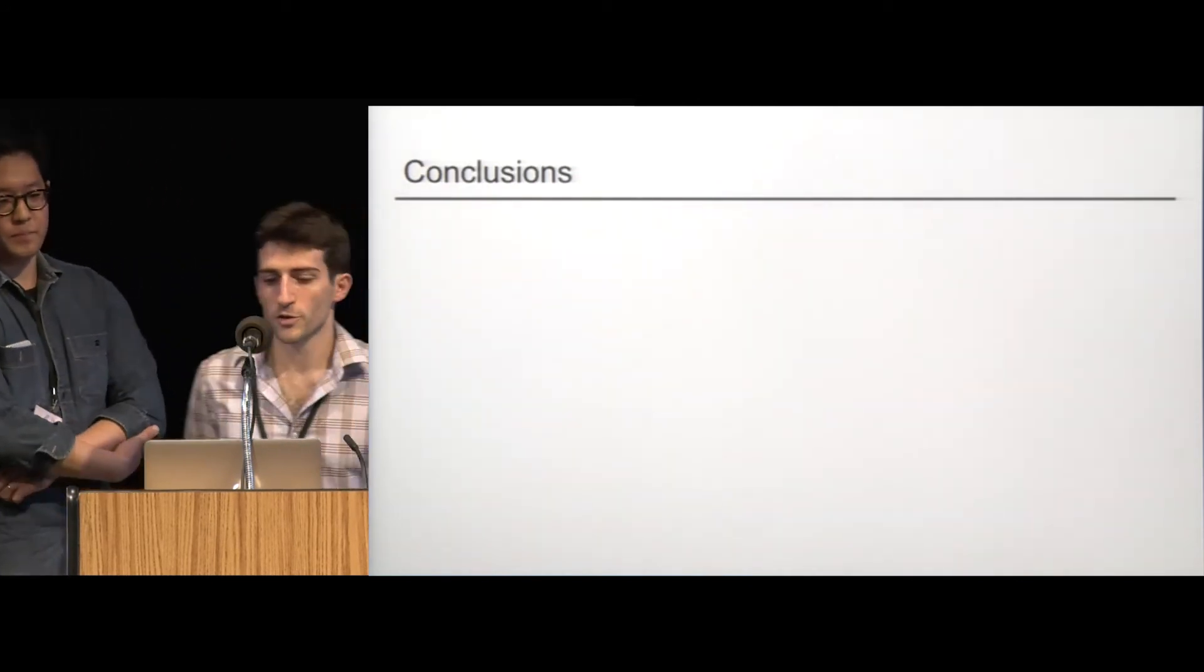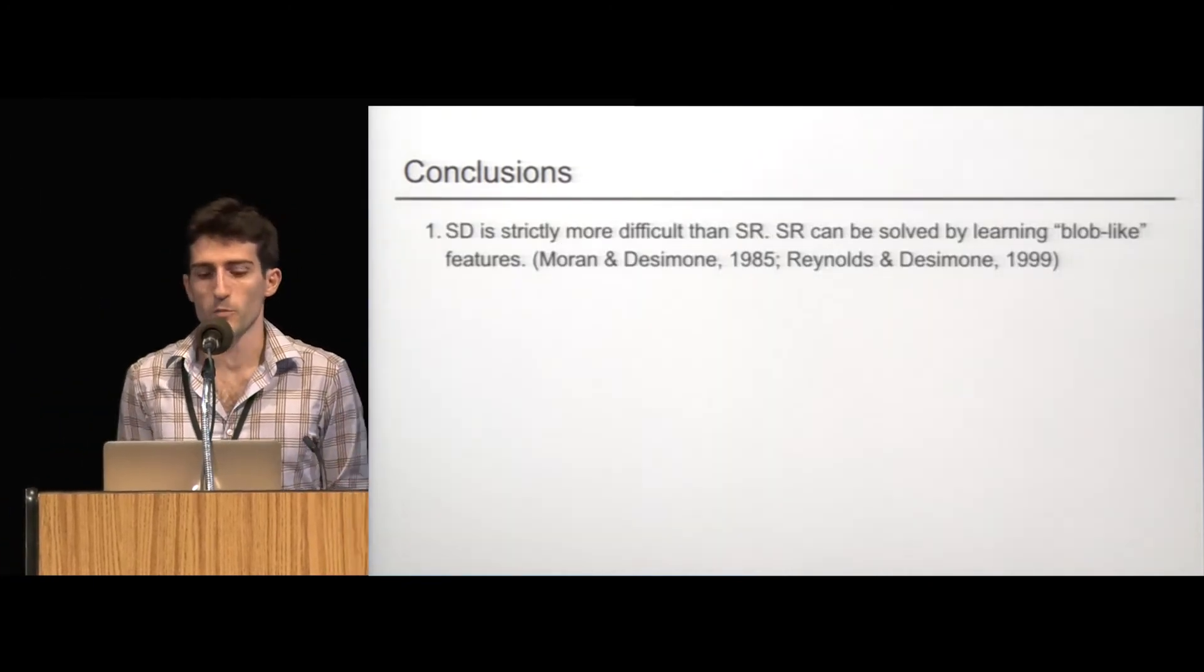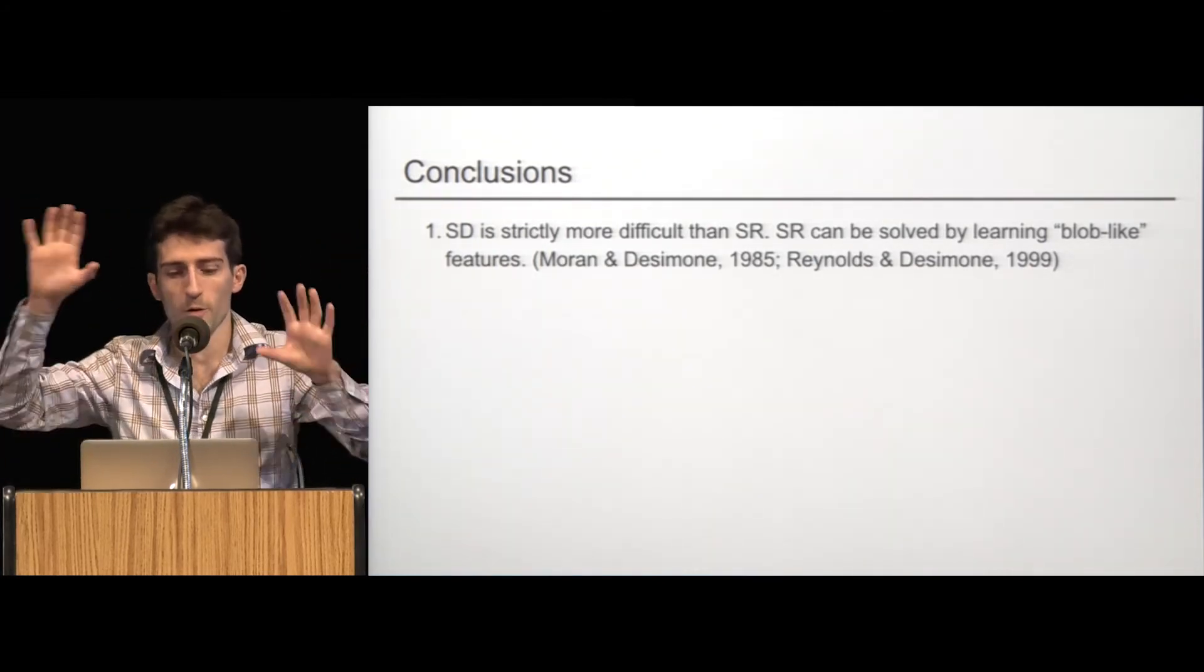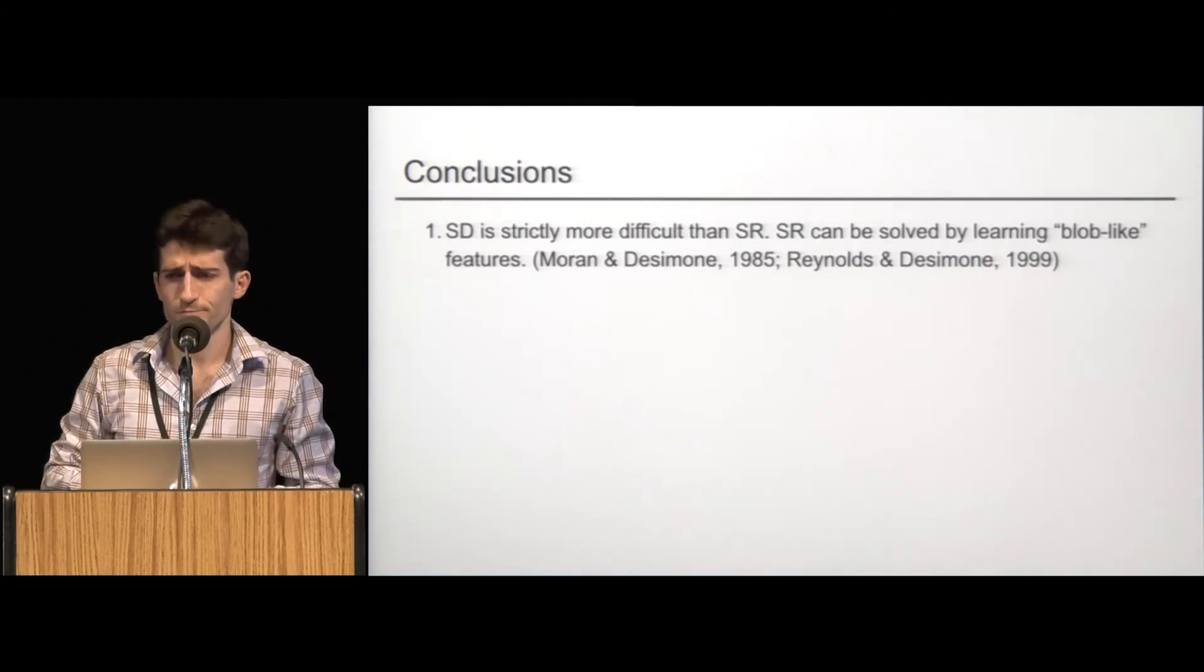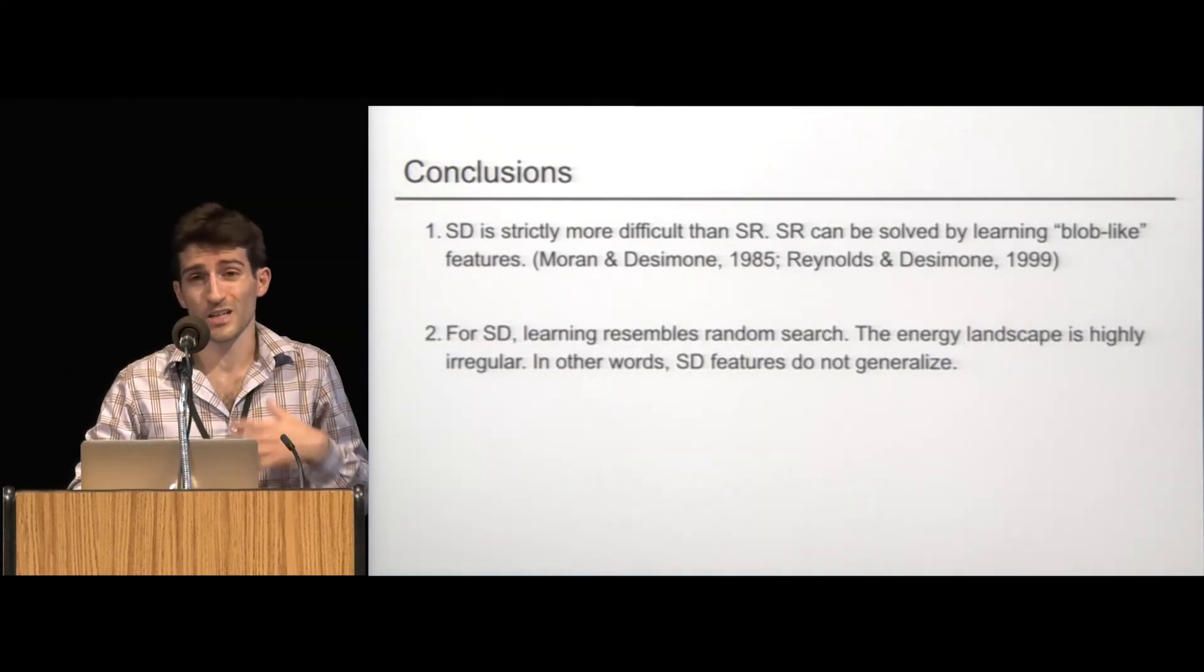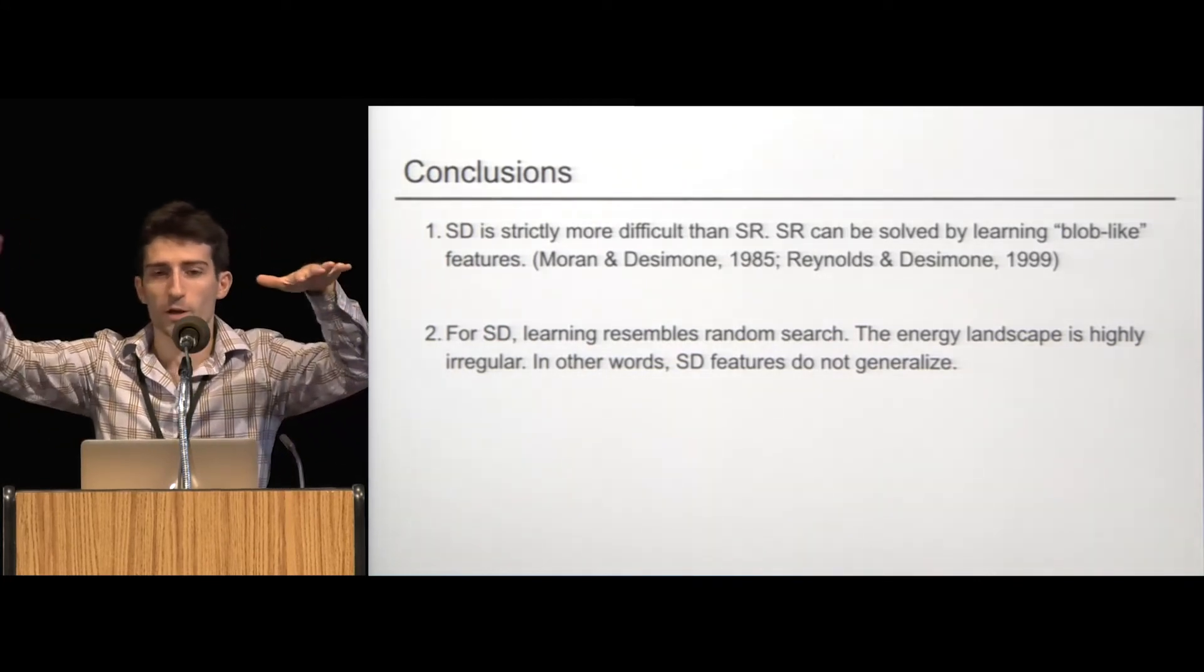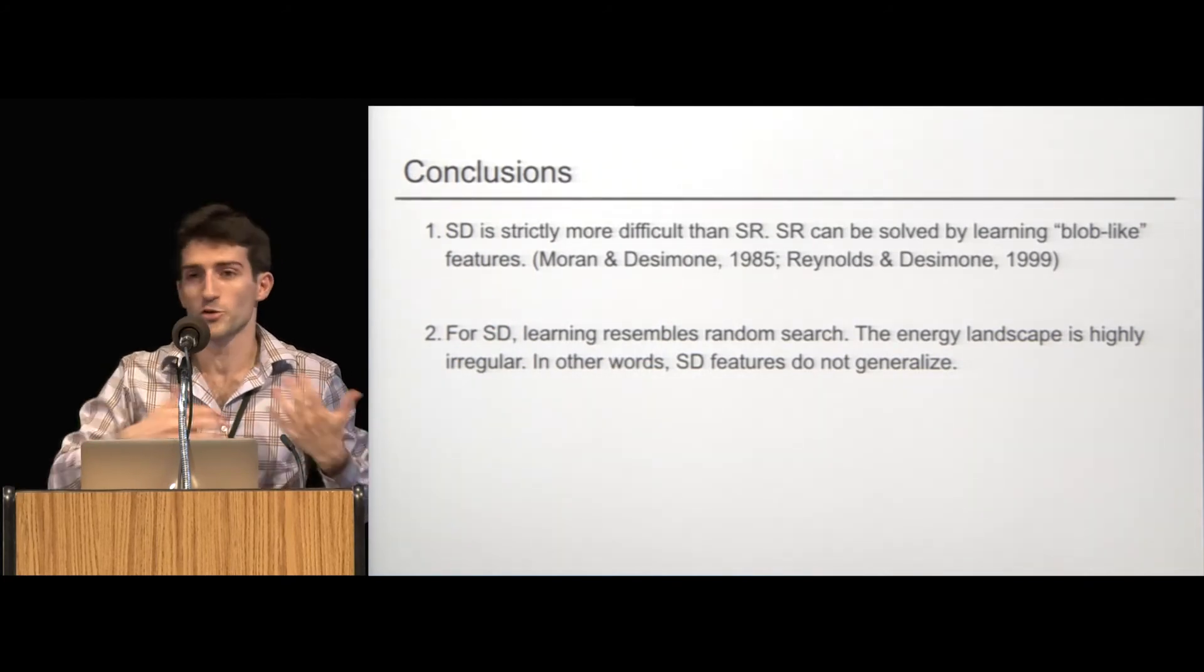So, let's draw a couple of conclusions. The first conclusion, as J.K. said, is that same difference is strictly more difficult than spatial relations for somewhat intuitive reasons for CNNs. Spatial relations can be solved with these blob-like templates. Incidentally, this is the way that the Desimon group thought that LOC could solve spatial relations, though we have reason to doubt that. A second conclusion is for same different, even when it does learn, learning is done in some kind of unsatisfying way. Basically, it resembles a random search. In other words, the energy landscape is highly irregular and the global minimum is completely isolated. So, same different features don't generalize from batch to batch.